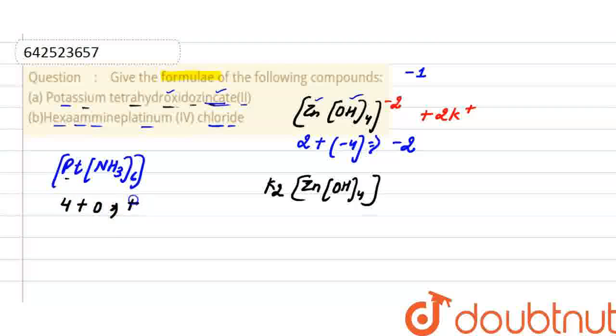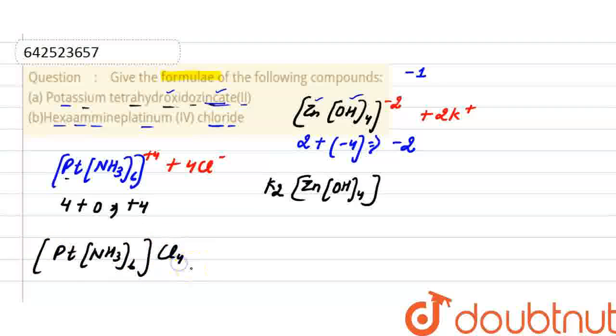So, 0. So the charge on the complex here is +4. That means it is a cationic complex. And to balance out this charge, there are 4 chlorine atoms.